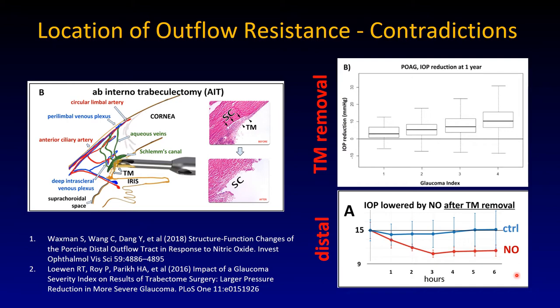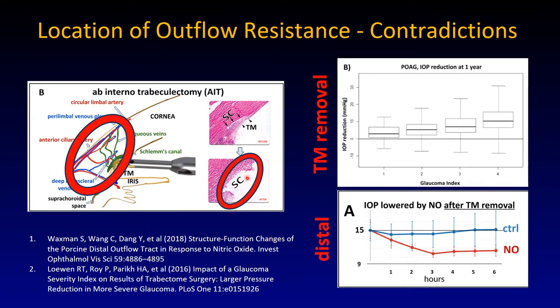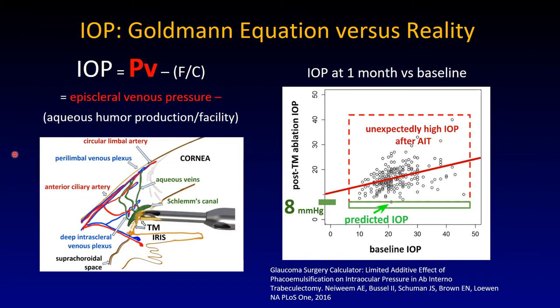Dr. Stamer's lab has done a very similar study and in addition to using porcine eyes they've also used human eyes, observing a similar effect. One can conclude there are probably two resistor elements: one is the trabecular meshwork, and there must be another area of outflow resistance downstream of Schlemm's canal — because if that were not the case you would expect a pressure of 8 mmHg, the pressure found in the episcleral veins.